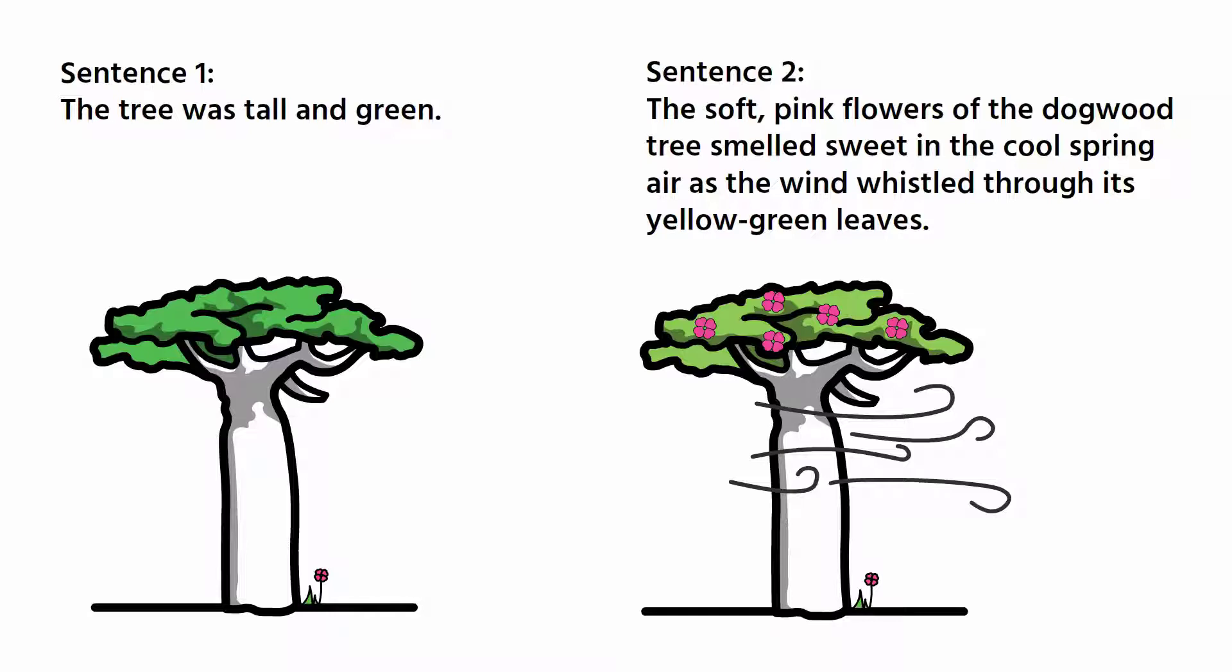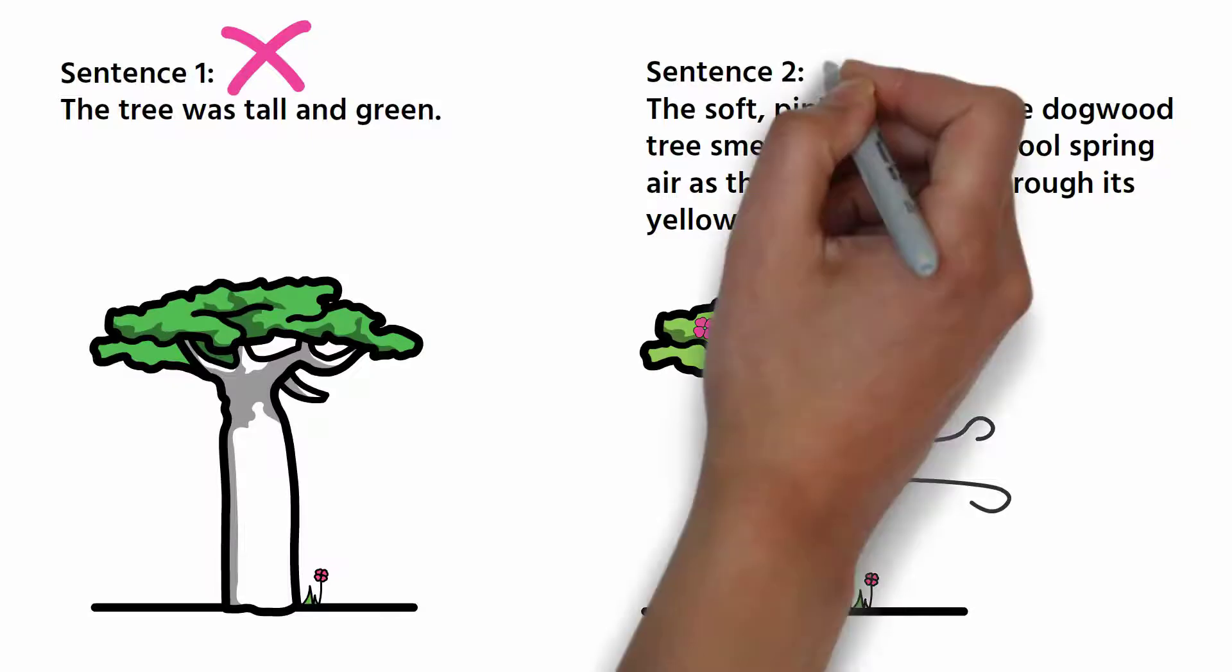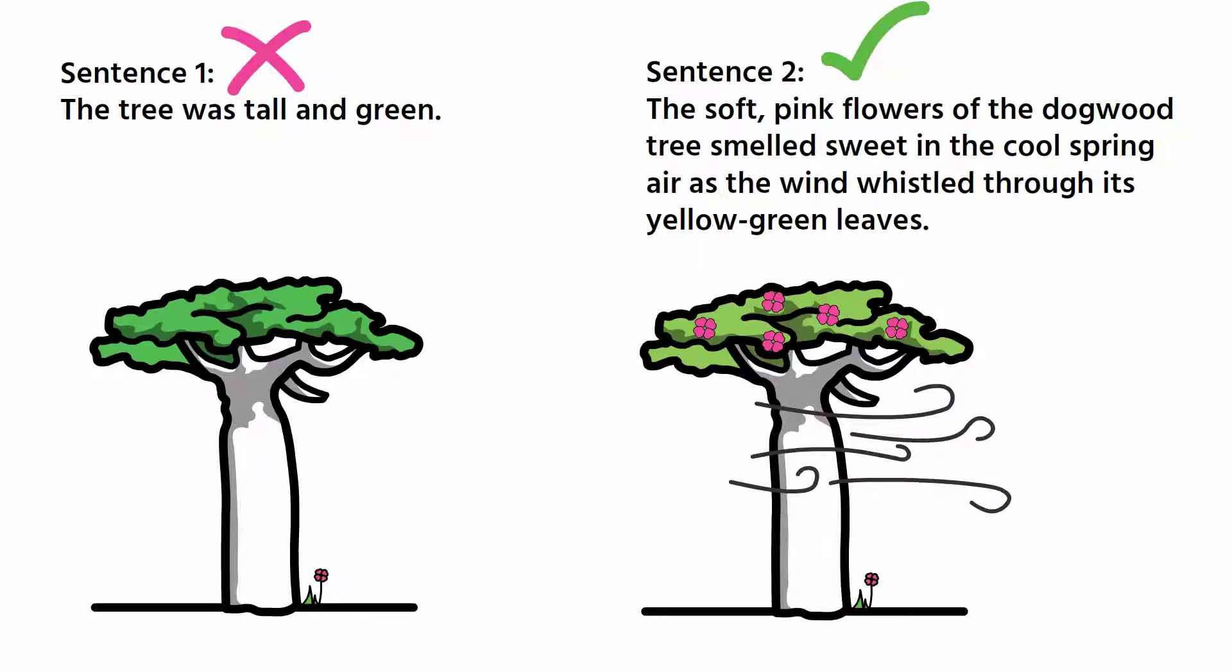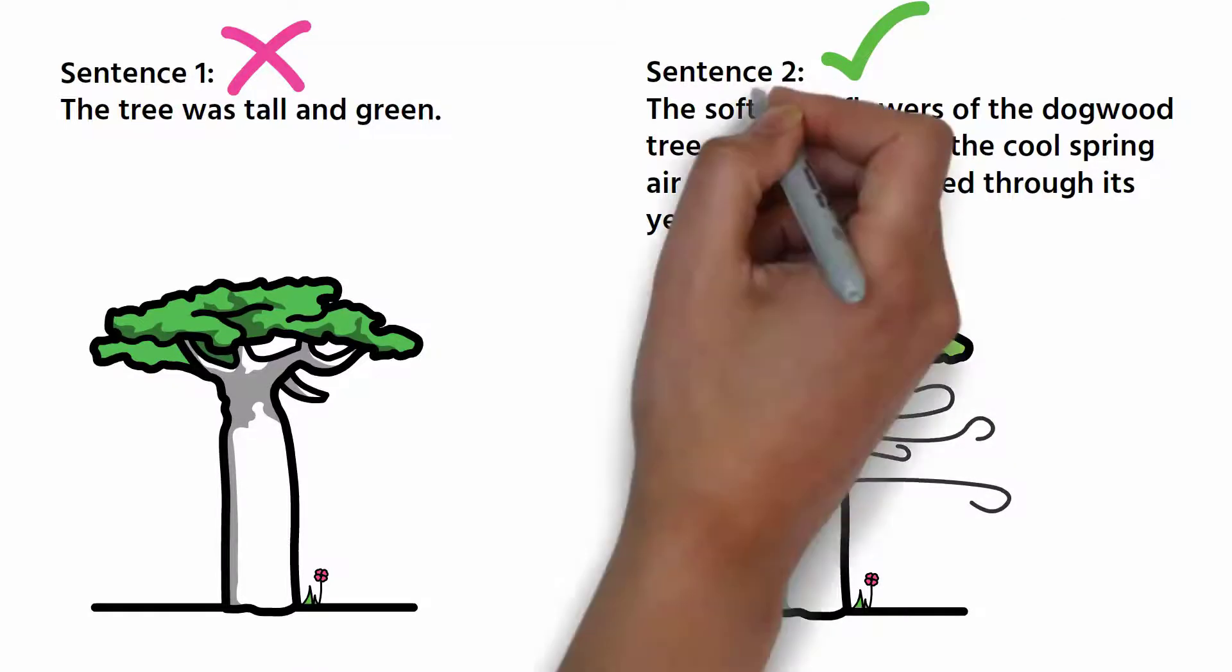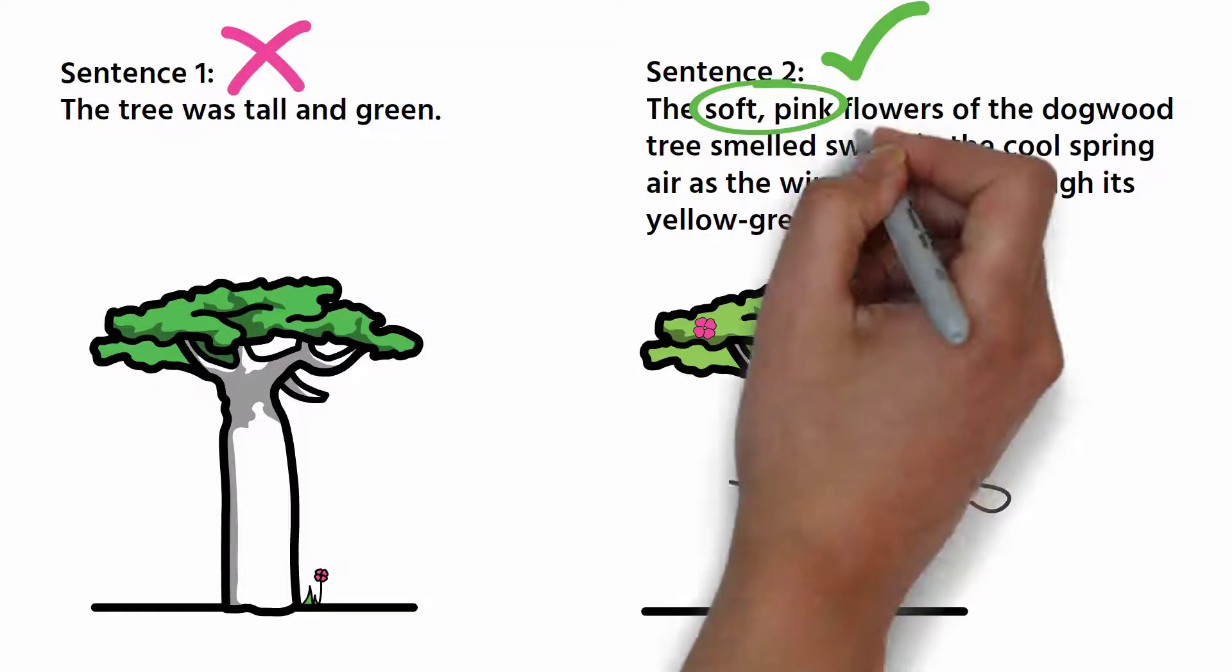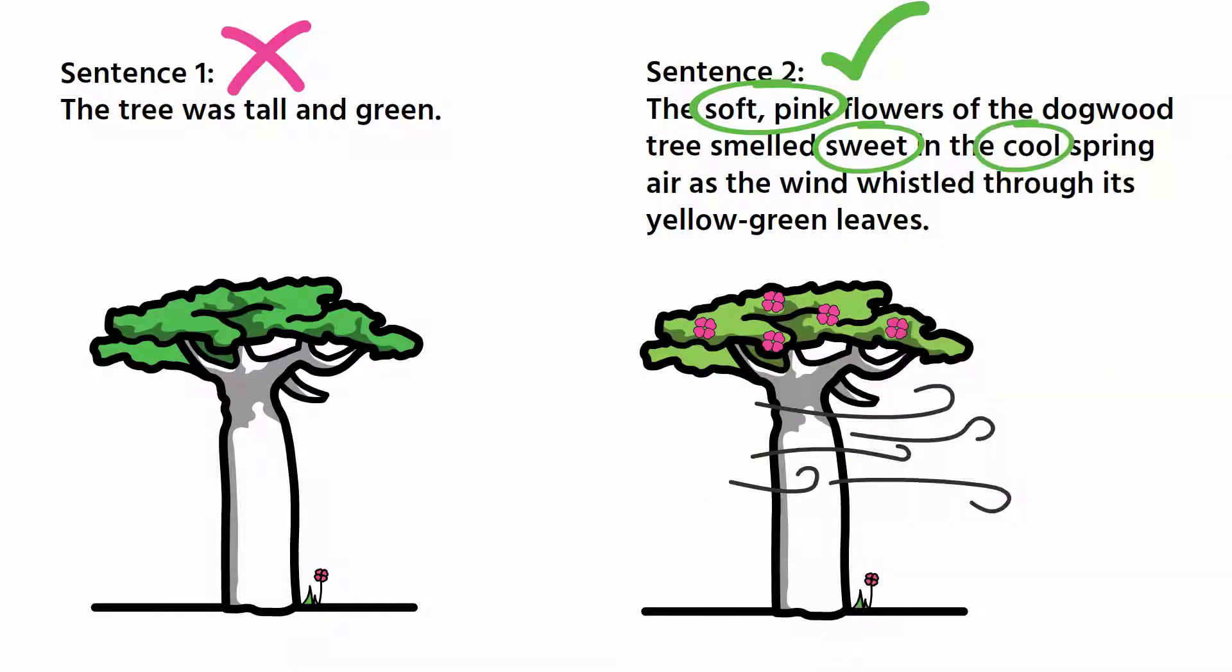Sentence 1 doesn't really appeal to the senses, whereas sentence 2 is more descriptive. It appeals to our senses by describing the flowers as soft and pink, the smell as sweet, the air as cool, and the wind as whistling. It paints a picture so that we can imagine the scene.